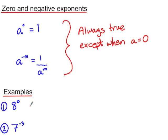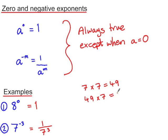Here are a couple of examples. Eight to the power of zero: using the index law, anything to the power of zero is always one. Secondly, seven to the power of negative three: here a is seven and m is three, so this equals one over seven to the power of three. Seven times seven is forty-nine, and forty-nine times seven is three hundred and forty-three, so this is one over three hundred and forty-three. Note that a negative power does not result in a negative number — it means a fraction, but not a negative fraction.